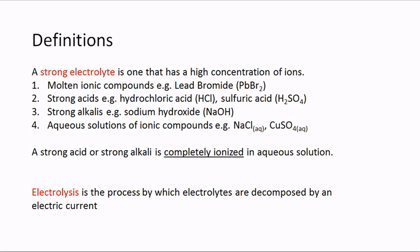A strong electrolyte is one that has a high concentration of ions present. Examples of strong electrolytes are molten ionic compounds — for example lead bromide (PbBr₂) — strong acids such as hydrochloric acid and sulfuric acid, strong alkalis such as sodium hydroxide, and solutions of ionic compounds such as sodium chloride dissolved in water or copper sulfate dissolved in water.